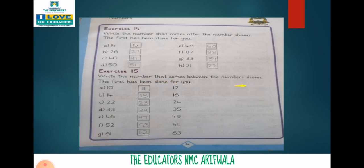Then Exercise number 15: Write the number that comes between the numbers shown. The first has been done for you. We will write the number between. Like ten and twelve — between them comes eleven. Fourteen and sixteen — between comes fifteen. Twenty-two and twenty-four — between comes twenty-three. Thirty-three and thirty-five — between comes thirty-four. Forty-six and forty-eight — between comes forty-seven. Fifty-two and fifty-four — between comes fifty-three. Sixty-one and sixty-three — between comes sixty-two.